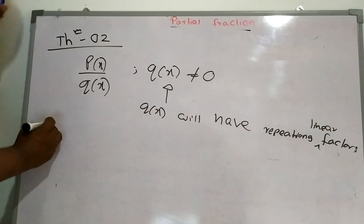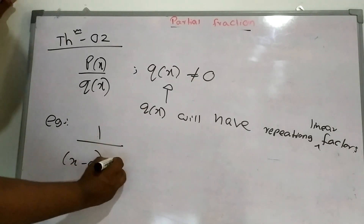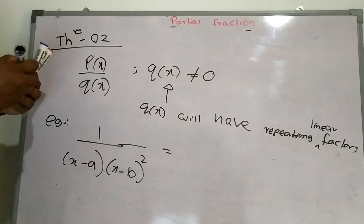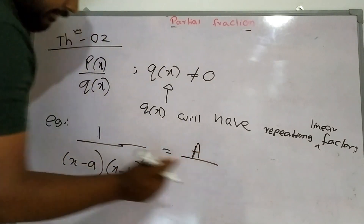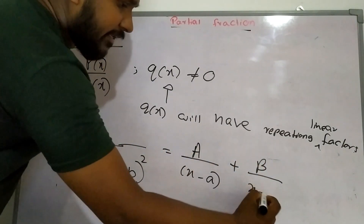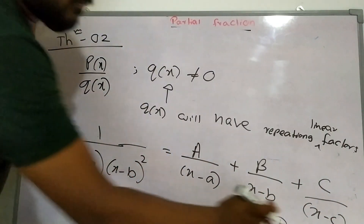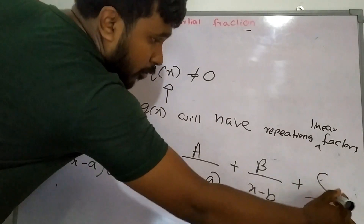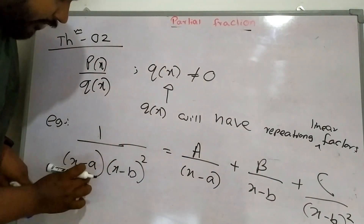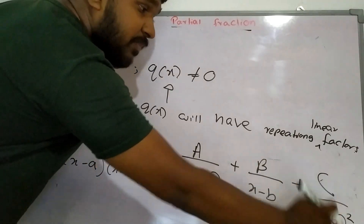As an example, we can consider (x minus a)(x minus b) squared. The partial fractions will be A over (x minus a), B over (x minus b), plus C over (x minus b) squared. So I put x minus a over here and added both the linear term x minus b and the squared term.